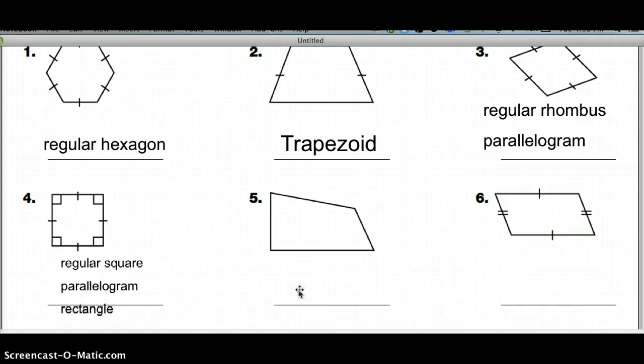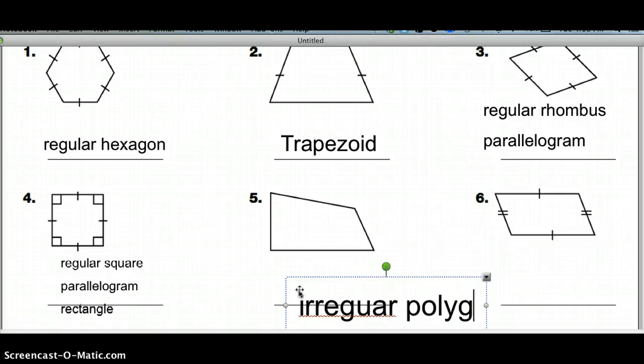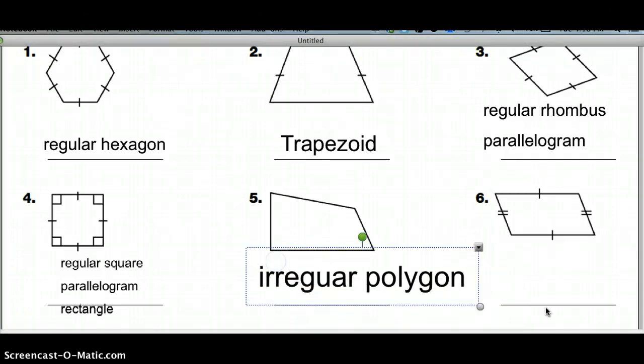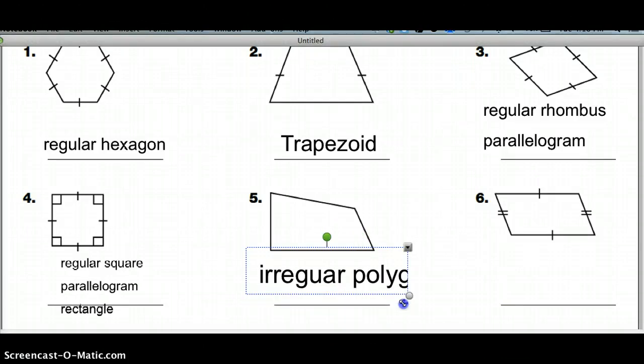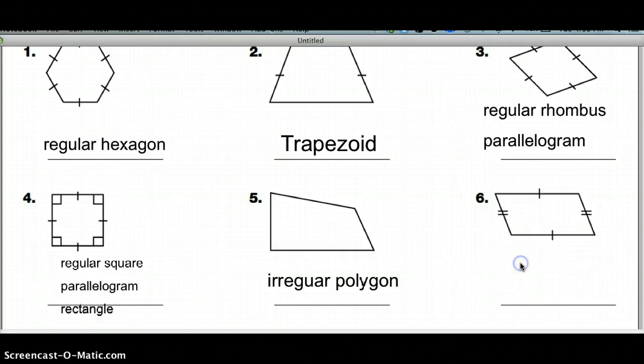Number five. It doesn't fit anything. It is a regular polygon. Number six. Opposite sides are parallel. It doesn't really fit any of the other descriptions. Parallelogram is about all.